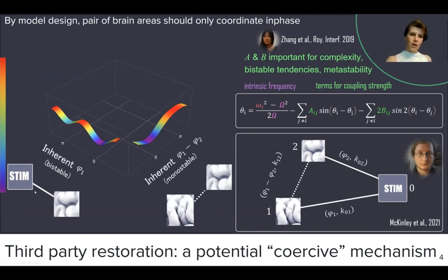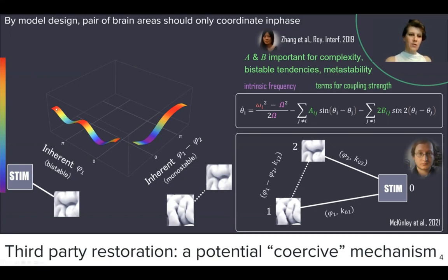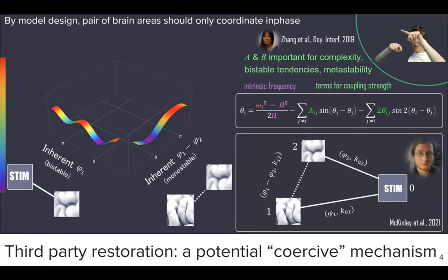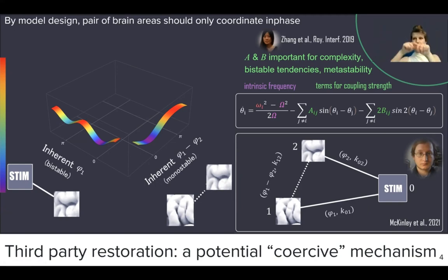In this model, Joseph coupled both of those brain areas to a third-party oscillator representing stimulation. This third-party oscillator was chosen in a range of parameter space where it was competent to have bi-stability with both brain areas. Its inherent potential has both dwells — in anti-phase, where the stimulation and the brain area go opposite to one another, as well as in-phase, where both the stimulation and the brain area move together.